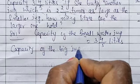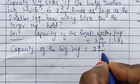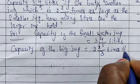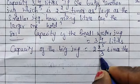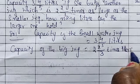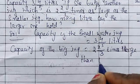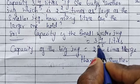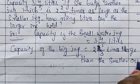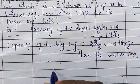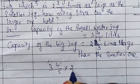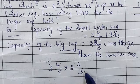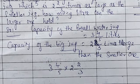Capacity of the big jug — the larger jug is 2 and 2/3 times larger than the smaller one. So we calculate 3 and 4/5 into 2 and 2/3 to find how many liters the larger jug can hold.